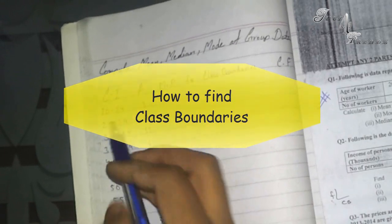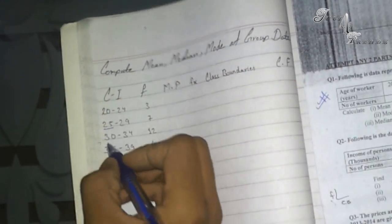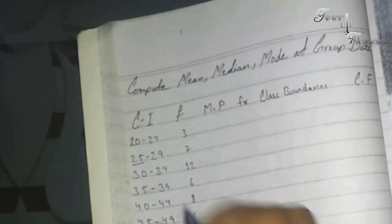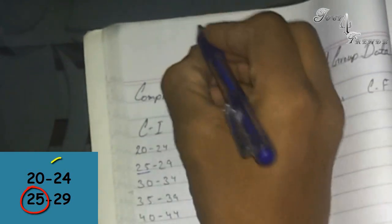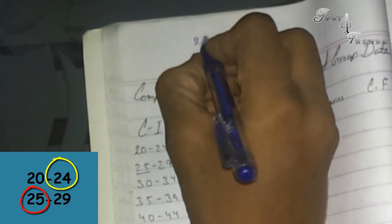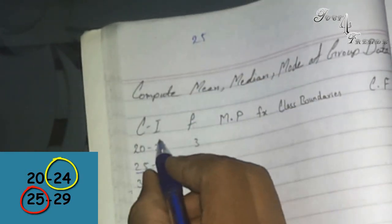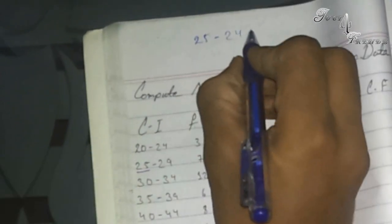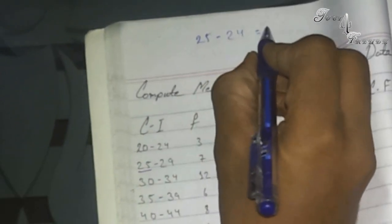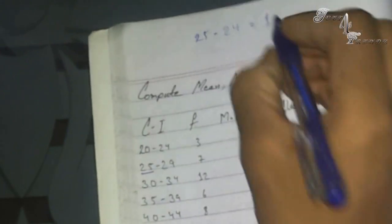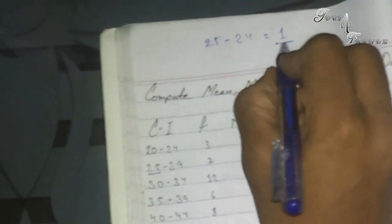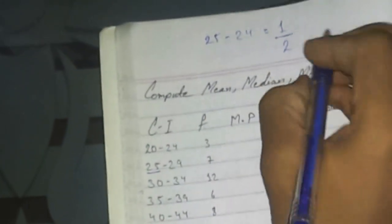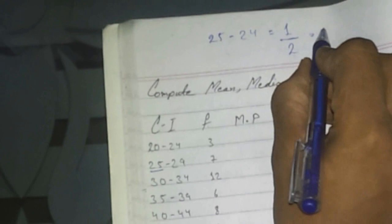You have to do this. Take the second class interval and minus the ending of the first class interval. You have a difference of 1. Now you just need to divide this number by 2. You get 0.5.